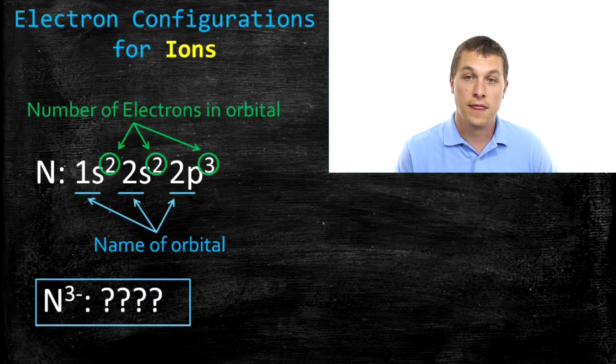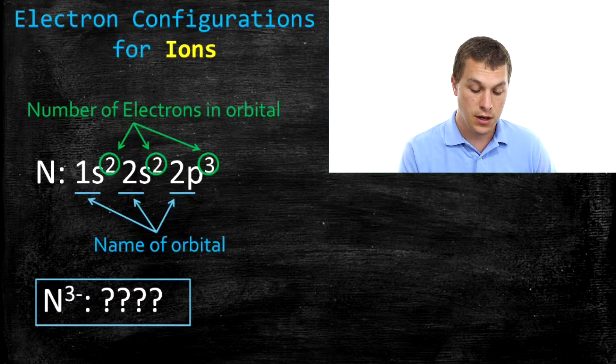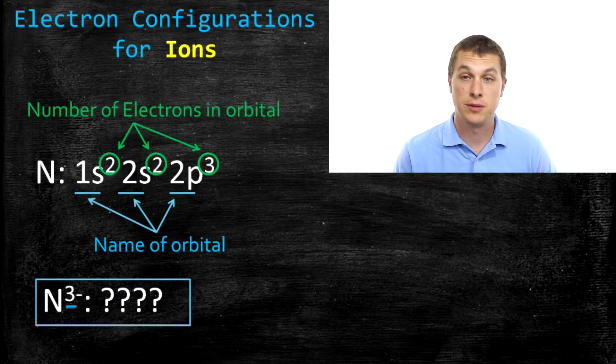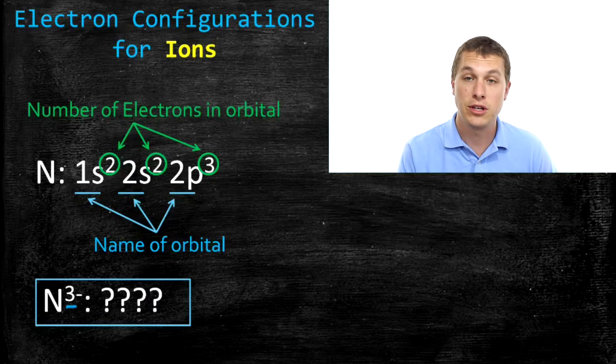Once you've done that, then I'm going to show you how we can write the electron configuration for nitrogen 3-. Nitrogen, but now it's an ion, it has three extra electrons. How do we do that?